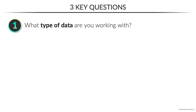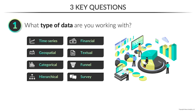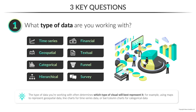So question one: what type of data are you working with? There are many flavors of data out there, including common ones like time series, geospatial, categorical, and hierarchical, but you might also come across more unique and specialized types as well, like financial statements, textual data, funnel stages, and survey responses. The key takeaway is that the type of data you're working with often helps determine which visual will best represent it. Common examples include using maps for geospatial analysis, line charts to show time series, and bar or column charts for categorical comparisons.